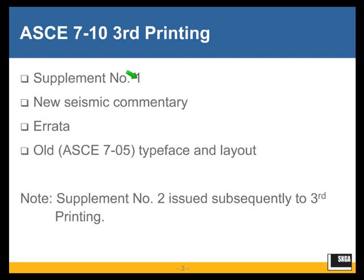The third printing includes Supplement Number One to AC710, which consists of about two dozen technical changes, mostly in the seismic area. Of those, I would say seven or eight are rather substantive. These technical seismic changes are integrated into AC710 in the third printing — meaning there are no separate pages telling you this is Supplement Number One. The items making up Supplement Number One have been placed where they belong in the standard, with indications that these are supplementary items.